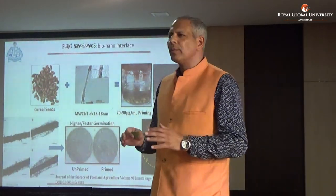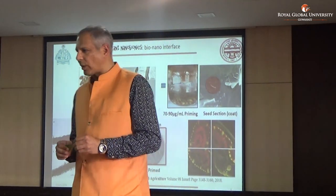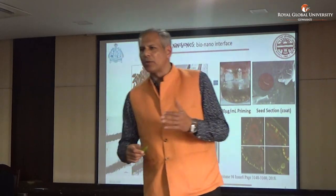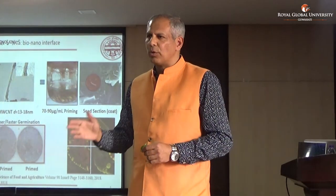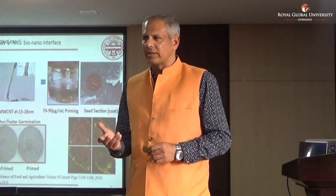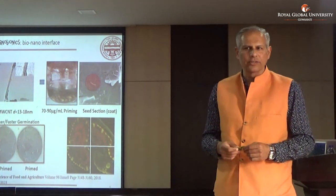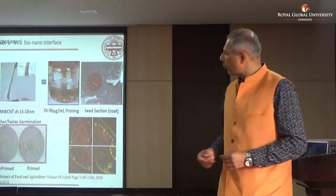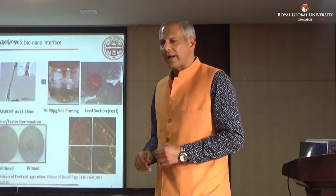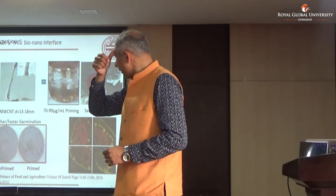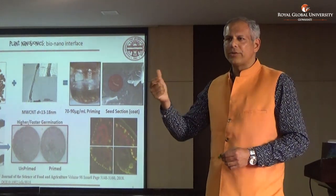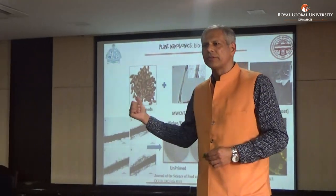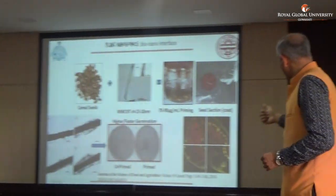The biggest fear with the human race is we will not have food security for everyone — this is one of the sustainable development goals. We are already surpassing a population of about 6 billion, and India is almost the most populous country. Food scarcity because of no availability of land is becoming a major challenge. So let's apply this to the agricultural field. What we have done — as part of my lab research — is use cereal seeds: wheat, rice, and oats. We have interfaced them with multi-walled carbon nanotubes and tried to prime them to see what happens.